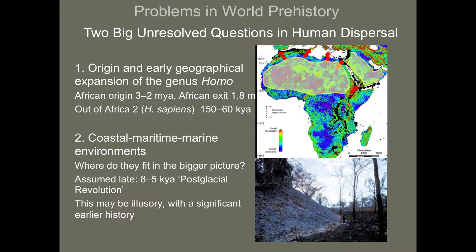My theme is partly about coastlines and coastal landscapes, but it's also about terrestrial landscapes. I want to look at two big issues, both related to the big question of human dispersal. The first big issue is the origin and early geographical expansion of the genus Homo.